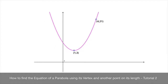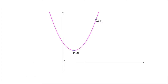In this second tutorial on the vertex form, we look at a couple more examples on how to find the equation of a parabola using the coordinates of its vertex as well as the coordinates of some other point on its length. In this case, the other point will be any other point on the curve's length, as opposed to what we had seen previously, in which the other point was the y-intercept. So let's get started.